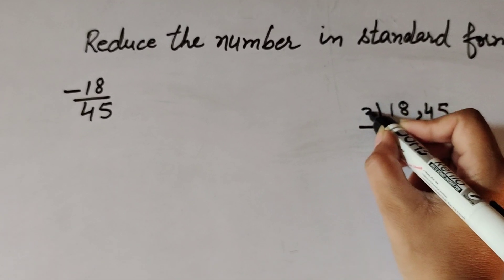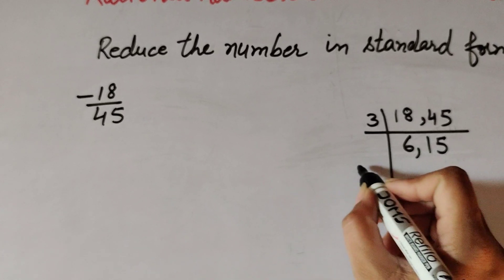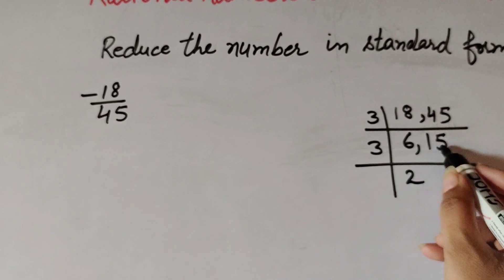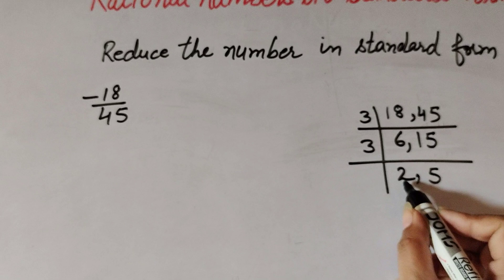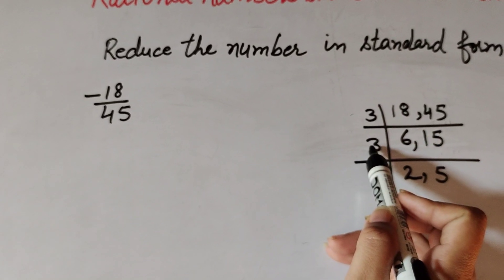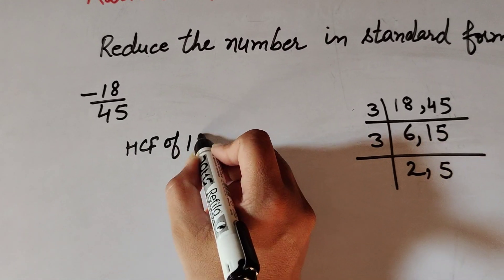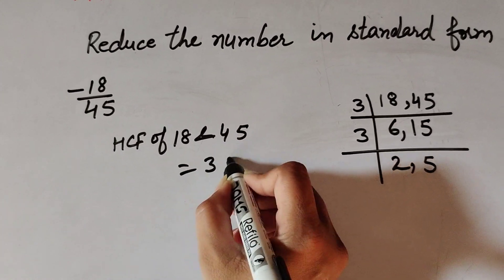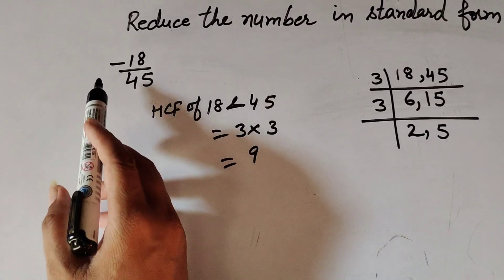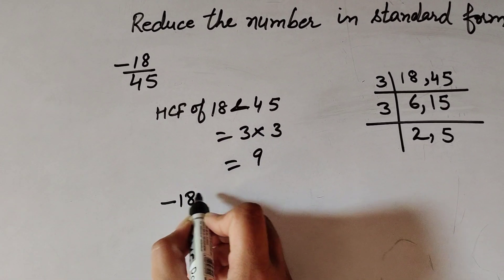Both 18 and 45 are divisible by 3. 18 divided by 3 gives 6, and 45 divided by 3 gives 15. Again both are divisible by 3. 6 divided by 3 gives 2, and 15 divided by 3 gives 5. Now 2 and 5 have no common factor, so we multiply 3 × 3. The HCF of 18 and 45 equals 9. So we divide numerator and denominator of -18/45 by 9.